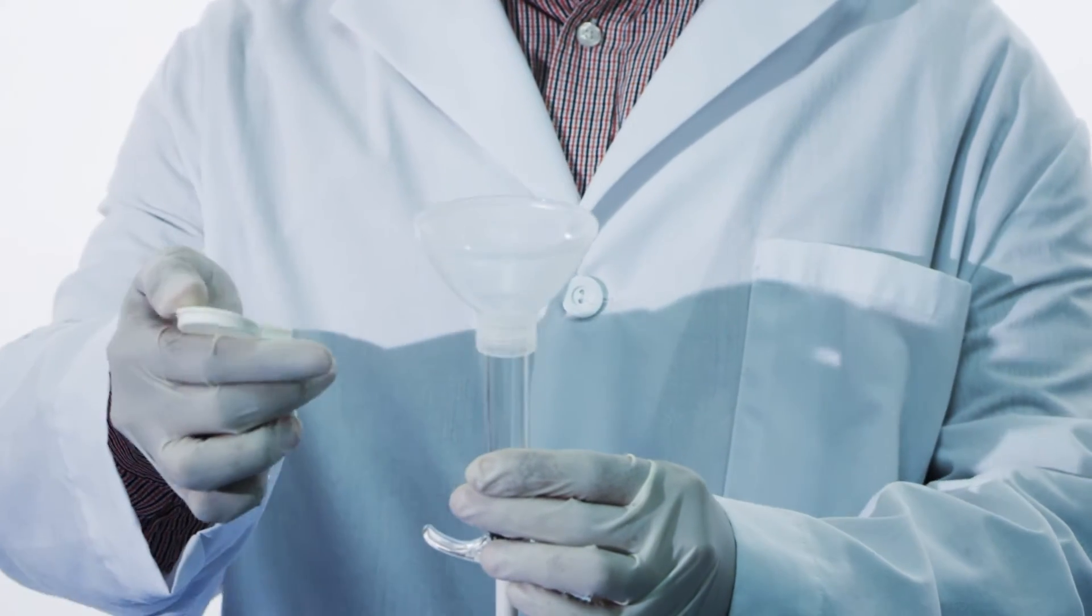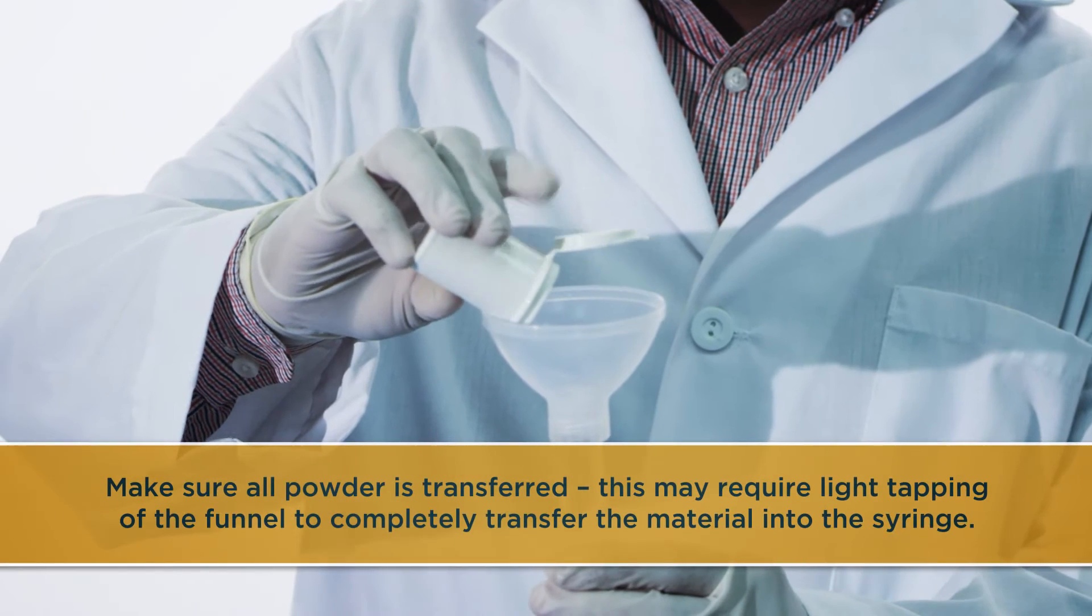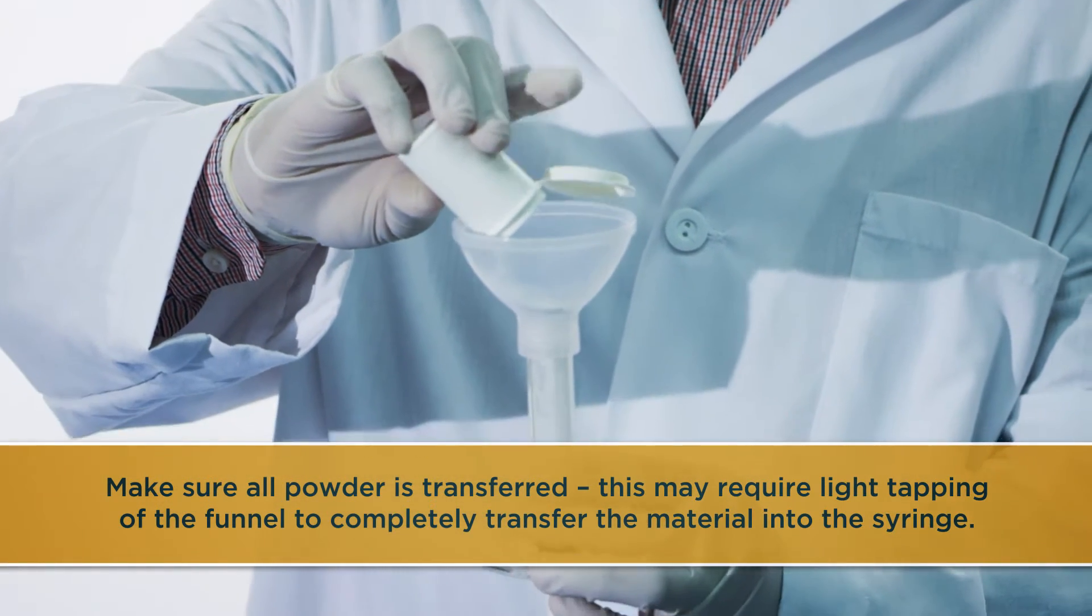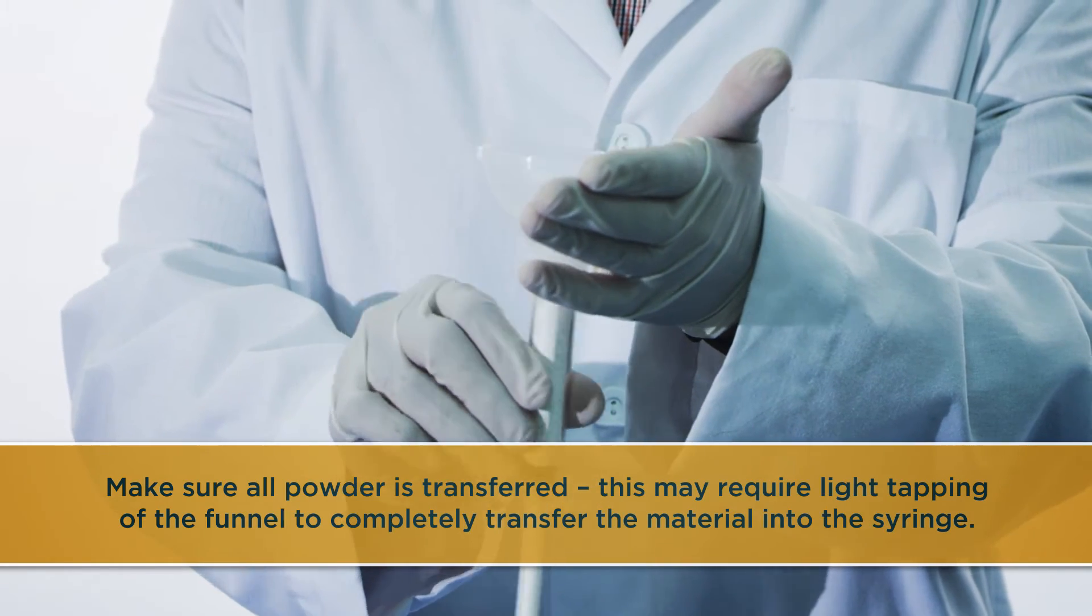Transfer the powder from the desiccant vial into the syringe using the funnel. Make sure all powder is transferred. This may require light tapping of the funnel to completely transfer the material into the syringe.